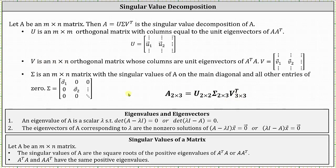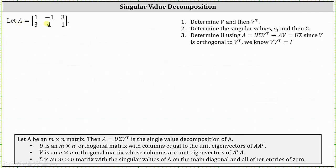Now let's look at an example. To find the singular value decomposition of the given matrix, we will follow three steps. Step one: determine matrix V and then V transpose. Step two: determine the singular values of matrix A and form the matrix sigma. Step three: determine matrix U using formulas. We begin by computing A transpose times A, since the columns of V are unit eigenvectors of A transpose times A.